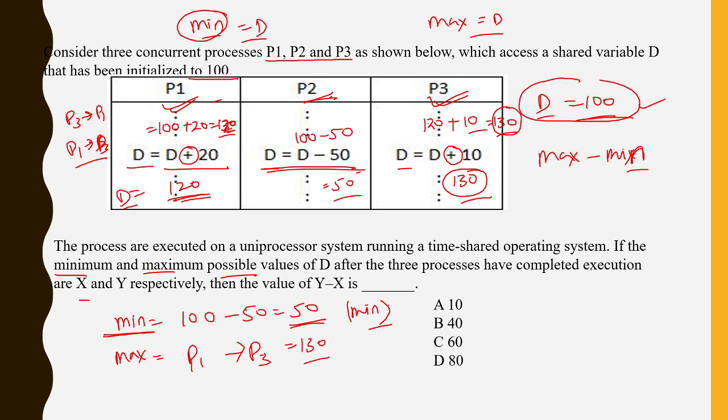So what will be the difference now? Difference will be max minus min. What is the difference? 130 minus 50, that is the difference. So difference will be 80. So your answer will be 80 here. Then the value of Y minus X will be 80. So your answer will be 80.